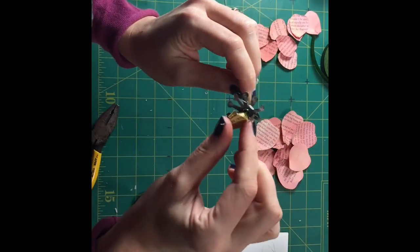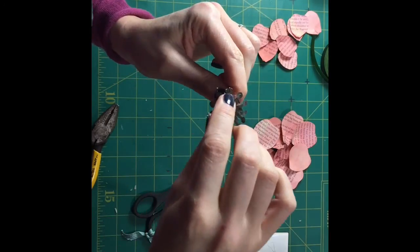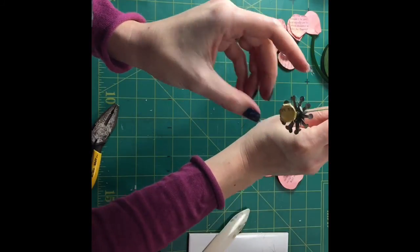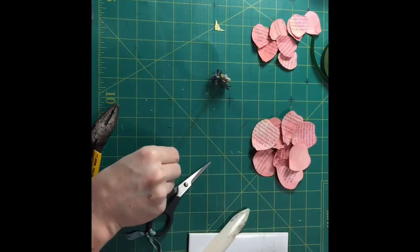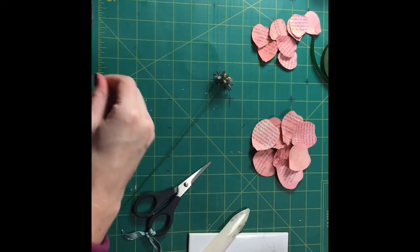There we go. Now the button is not quite in the middle but that doesn't matter all that much. Once you've got all your flower done it's fine. Okay let's get rid of some of these thingy bobs on my fingers.